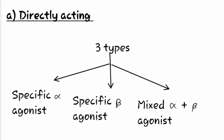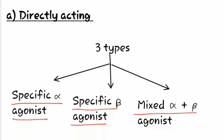Let us have a look at the directly acting drugs. Directly acting drugs can be classified into three types: first is specific alpha agonist, second is specific beta agonist, and the third is mixed alpha and beta agonist.